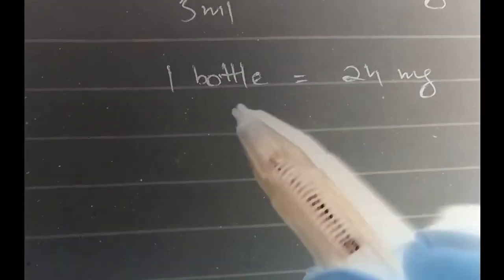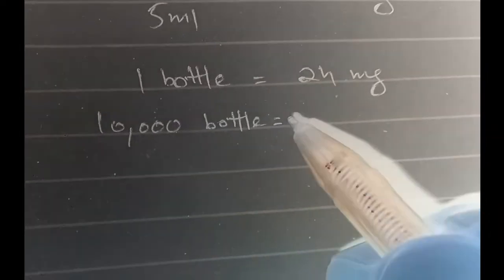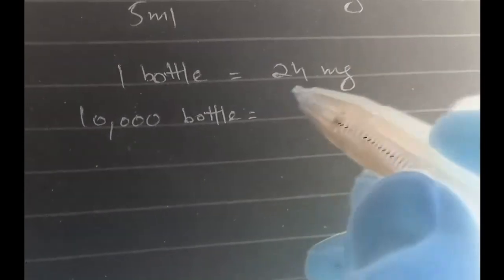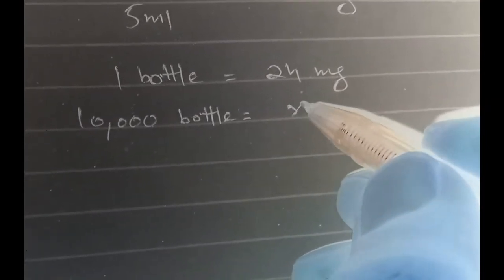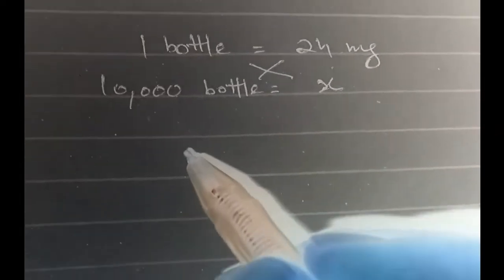And our batch size is 10,000 bottles, so we will be cross multiplying it. So solving for x: